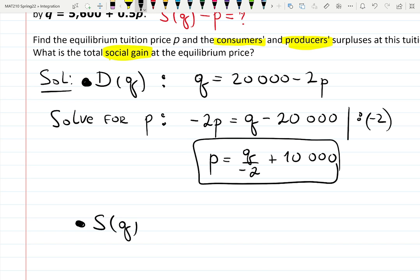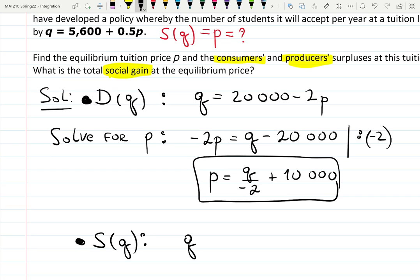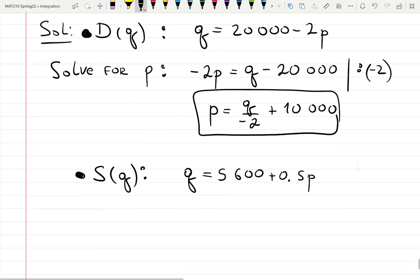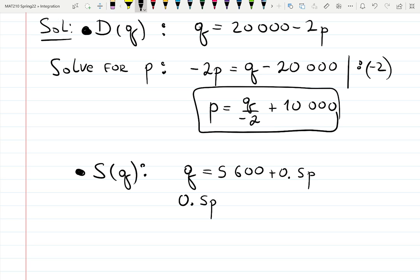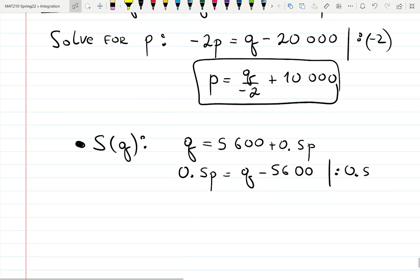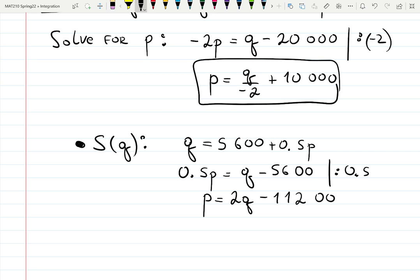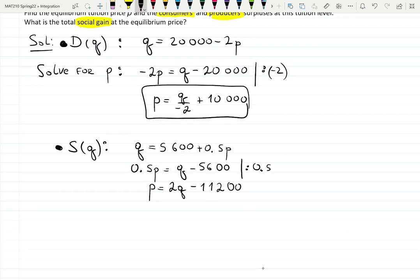Now let's find the supply equation the same way. The second equation was given as Q equals 5,600 plus 0.5P. That means 0.5P equals Q minus 5,600. Dividing by 0.5 means multiplying by 2, so P equals 2Q minus 11,200. That looks correct. Now we have both equations — step one is done.